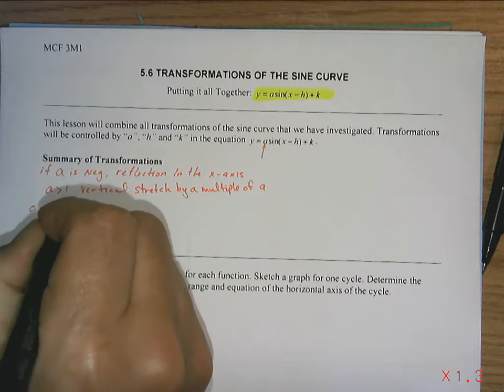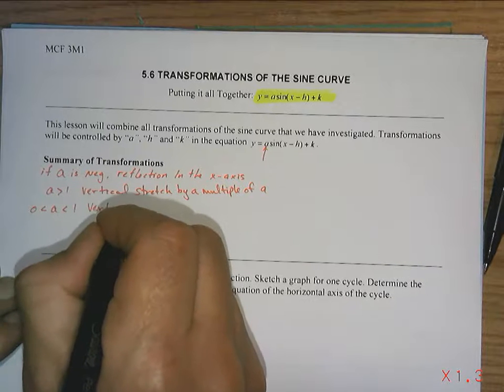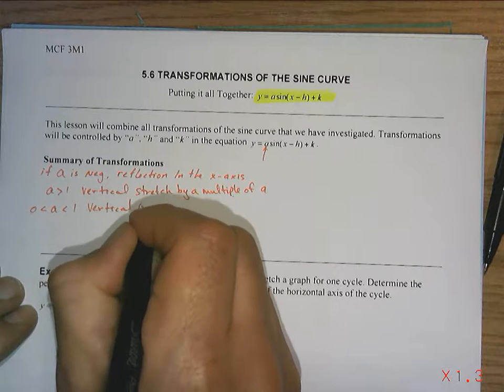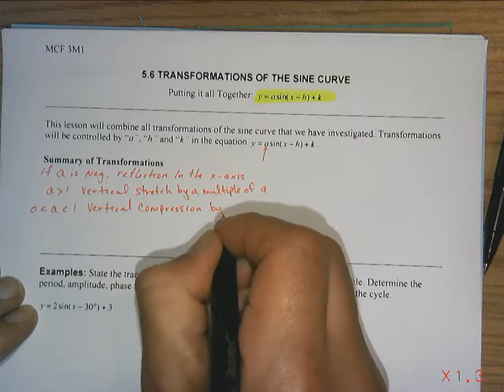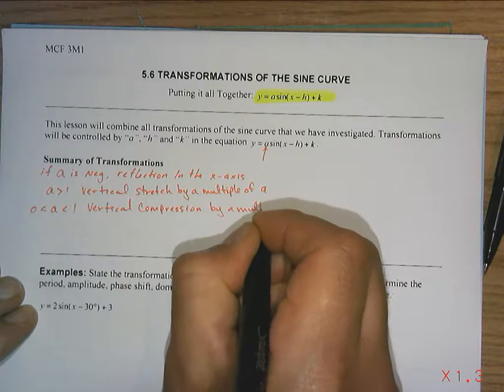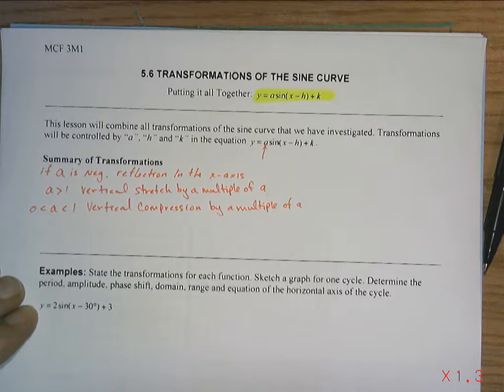And if a is between 0 and 1, then you have a vertical compression by a multiple of a. So those are all the things that happen with a.